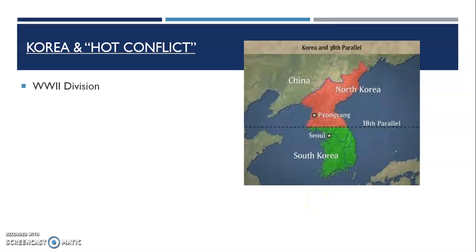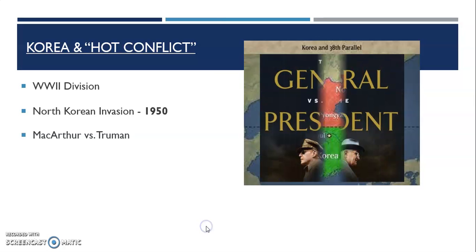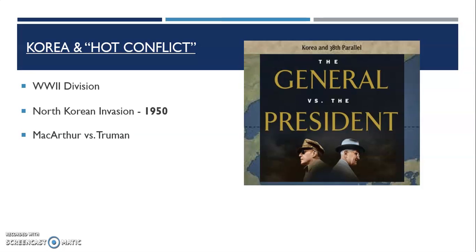MacArthur wanted to try again, but Truman did not want to get into a war with China. He told MacArthur he was only allowed to go until the 38th parallel and keep South Korea democratic. MacArthur was very mad about this. In fact, he went against the President and wrote a letter basically calling him out and attacking him. When this letter became public, he was fired by Truman for insubordination. The fight was turning ugly, and Korea was no closer to being won.